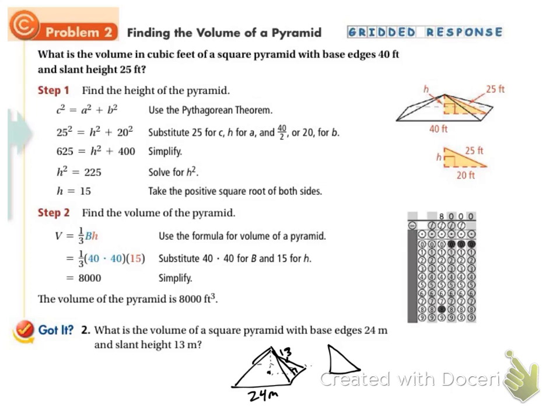Our slant height is 13. To figure out this distance right there, this is a square, so that's just going to be half of our side length. So 24 divided by 2, that's 12. And I'm looking for that height. So I'm going to use the Pythagorean theorem.